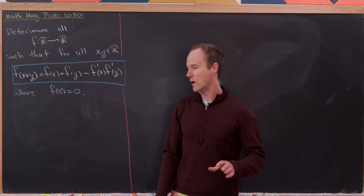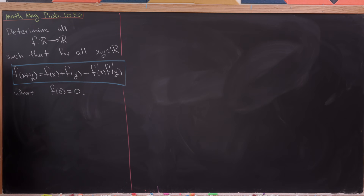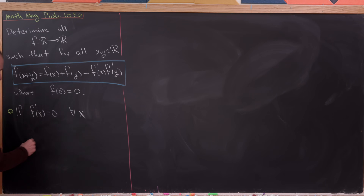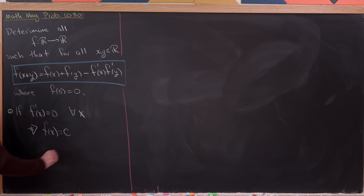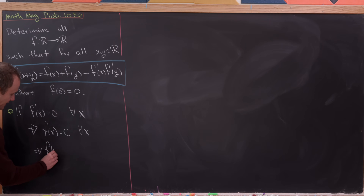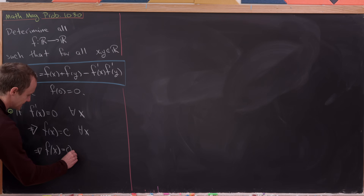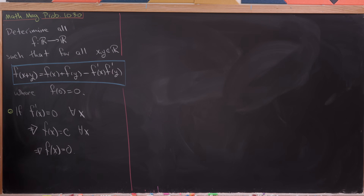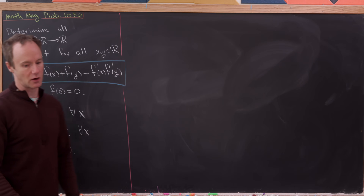We're going to take care of one case very quickly. If f'(x) equals 0 for all x — in other words if the derivative is always 0 — then f(x) equals a constant. But if f(0) equals 0, that means f(x) must equal 0. That case is simple and not super interesting, so let's look at the case where f'(x) is not always 0.